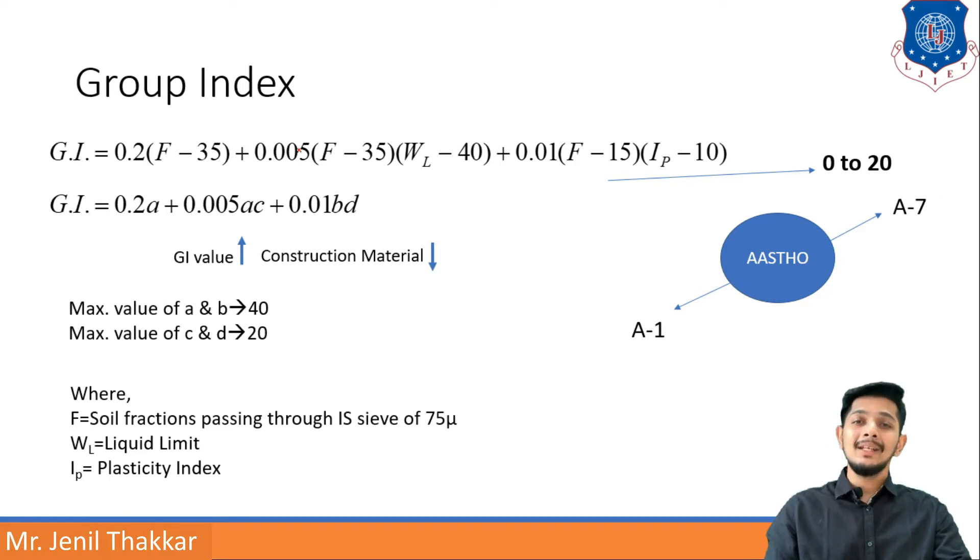Maximum value of A and B should be 40, and maximum value of C and D should be 20. So value of A and B cannot go above 40, and C and D cannot go above 20. This is group index, let us move forward.